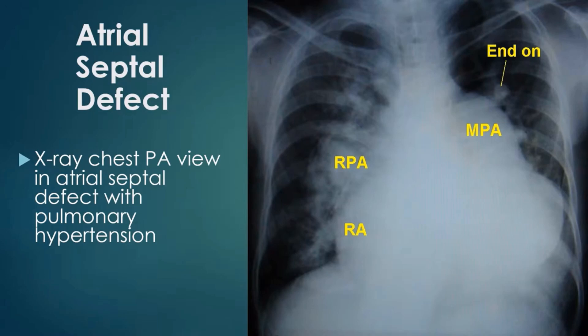X-ray chest PA view in atrial septal defect with pulmonary hypertension. The main pulmonary artery is grossly dilated. The right pulmonary artery is also quite enlarged. Right atrial enlargement is seen as a shift of the right heart border to the right of the spine. Pulmonary vascularity is increased and prominent peripheral vessels are seen. The apex is upward, suggesting a right ventricular configuration.